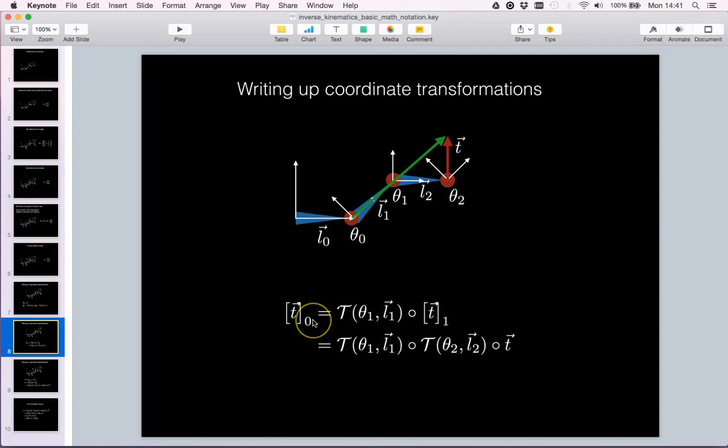And substituting in our results from previously we can see that we get T transformed by link transformation from link 2 and link transformation from link 1.